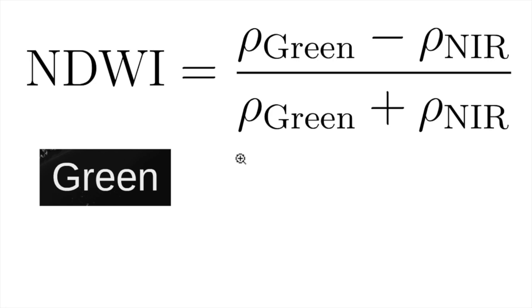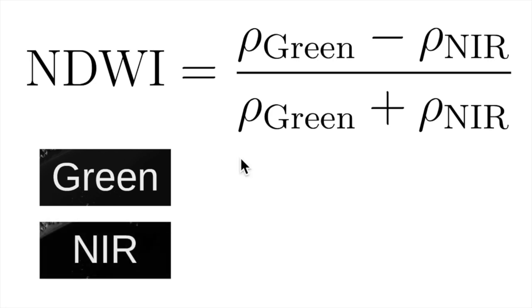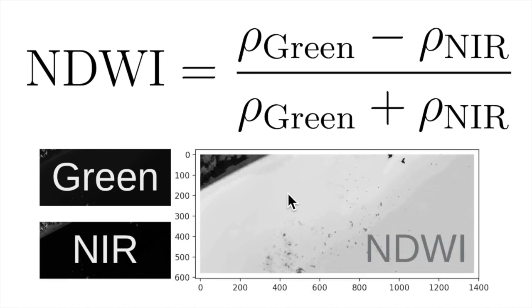For example, suppose we have this image which is the green band and this one which is the near-infrared band. If we apply the NDWI formula, in this case we can see that it highlights the targets related to water.